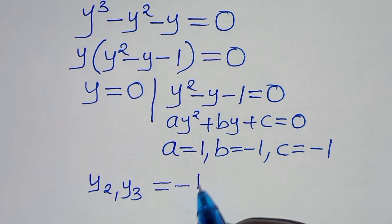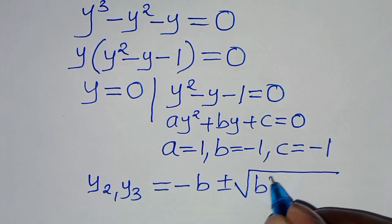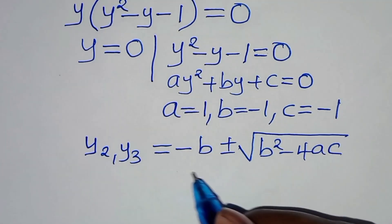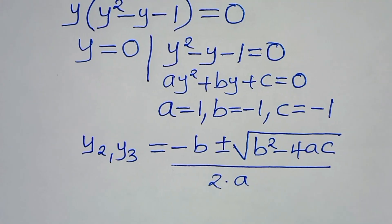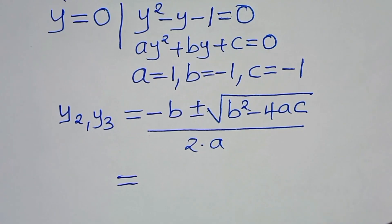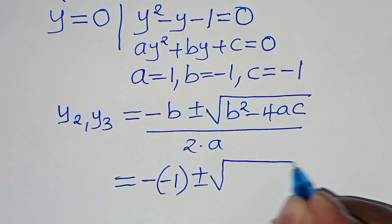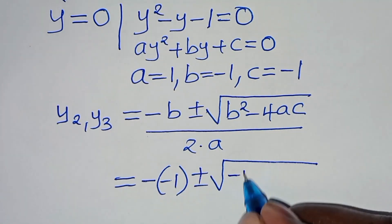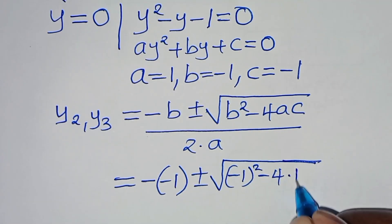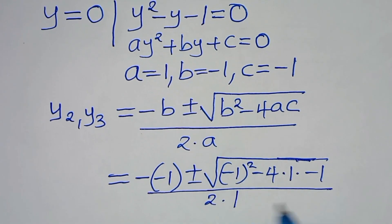So let's apply the quadratic formula to find y₂ and y₃. The quadratic formula is: minus b plus or minus the square root of b squared minus 4ac, over 2a. Substituting: minus times minus 1 is positive 1, minus 4 times a, which is 1, times c, which is minus 1, divided by 2 times 1.